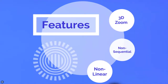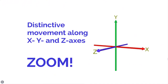The most obvious is its distinctive zooming movement. Instead of storing content on multiple slides, text and images are scattered across one large canvas. When presented, it moves along the X and Y axes as though the viewer is flying over the canvas, then zooms in on the Z-axis, giving the viewer a feeling of moving in and out of the presentation.